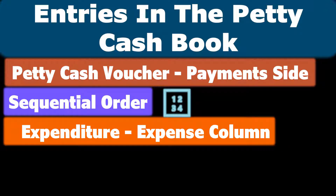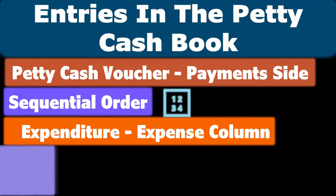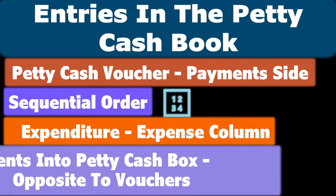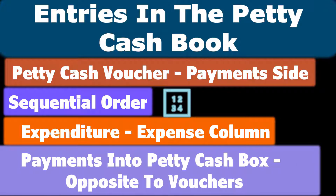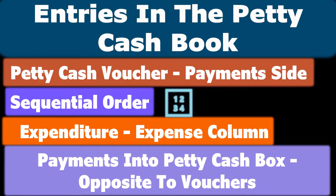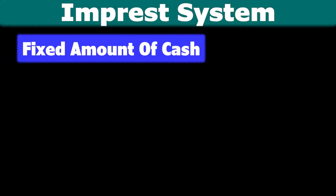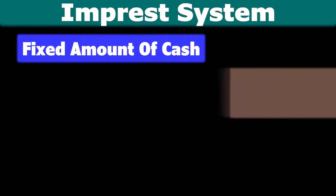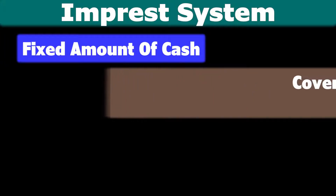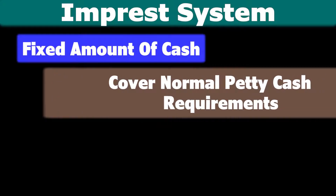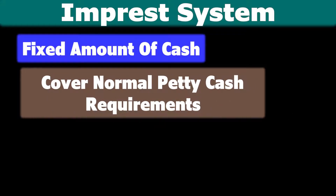Also, payments into the petty cash box will go on the opposite side to the petty cash vouchers. Now, let's discuss the imprest system, which is when the business decides on a fixed amount of cash, called the imprest, which is just large enough to cover normal petty cash requirements for a period, usually a month.